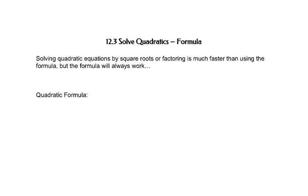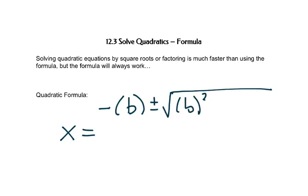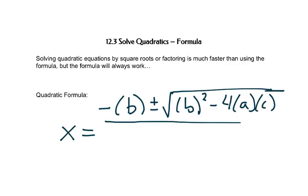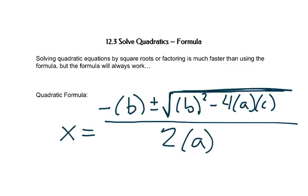Solving by using square roots or factoring is faster than using the formula, but if you're stuck the formula will always work. The formula is x equals the opposite of b, plus or minus the square root of b squared minus 4 times a times c, all over 2 times a. Every place there's a letter, put parentheses around it — that's important. It's also important to realize that the square root goes over the whole rest of that expression, and the division goes under everything on top.